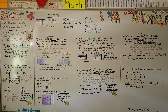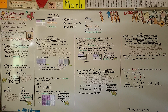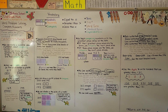In our next lesson, 2.12, we're going to compare three-digit numbers starting with the greatest place values. So stick with me. This will be the last lesson for chapter 2, and I hope I'll see you there.